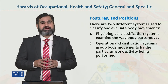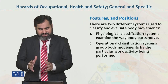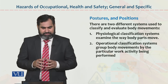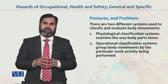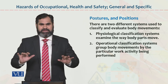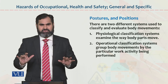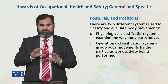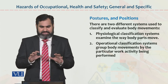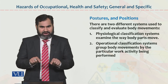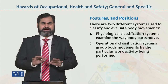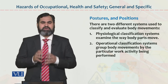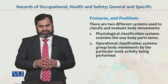Number two — operational classification system. Operational classification mein hum kya dekhte hain: group body movements by the particular work activity being performed. For example, I am typing. Typing ke liye meri specific part aur specific body movement — mere poore jism mein se meri eyes ka focus, aur us ke ilawa finger ki movement. Kya yeh thik hai, accurate hai, kaam sahi perform ker raha hai — is ko hum bolte hain operational classification system.